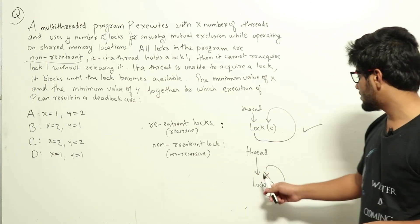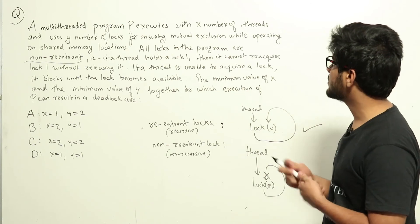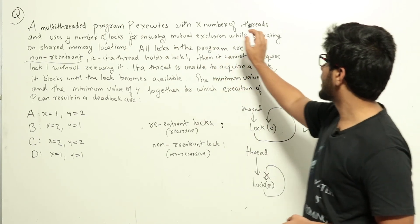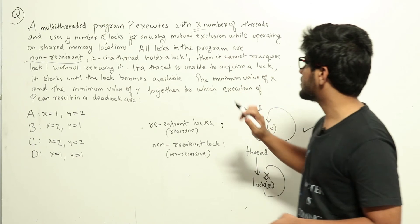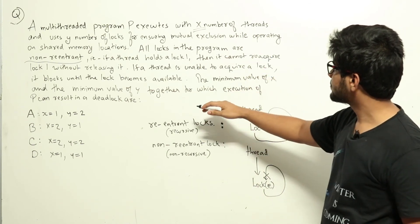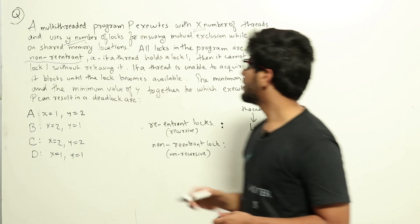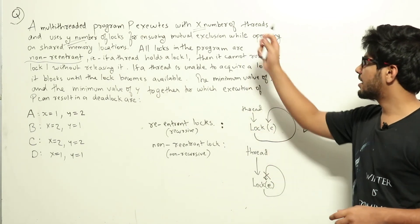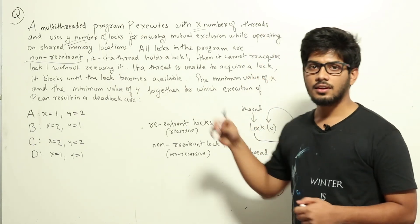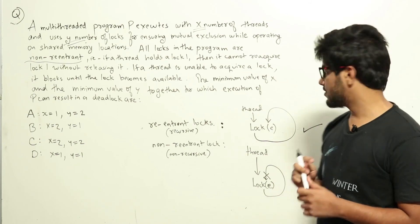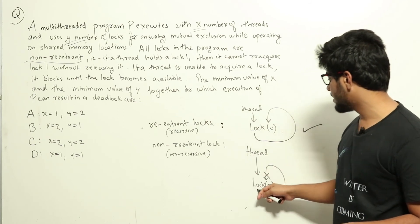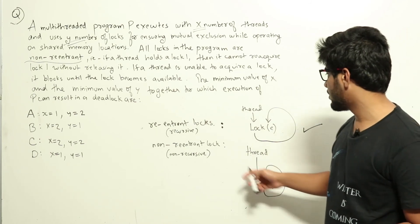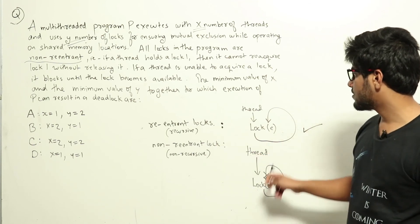So based on this we can try to answer the question. Here it is given that X number of threads are executing and there are Y number of locks. They are asking the minimum number of threads and the minimum number of locks to cause a deadlock condition. So clearly one single thread and one single lock itself can cause a deadlock if it is non-reentrant lock.